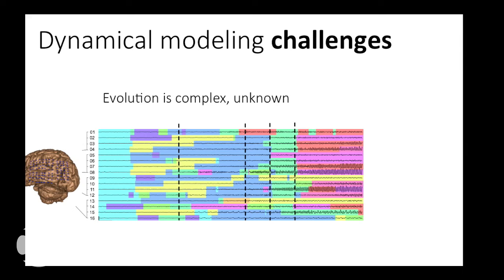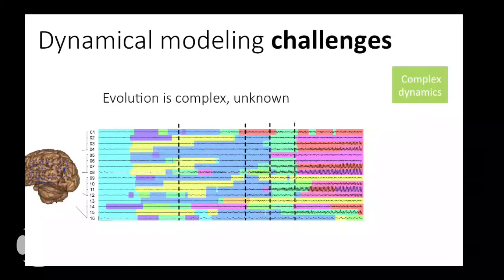When thinking about dynamical modeling, there are a number of challenges. One is that the dynamics themselves can be really complex. With intracranial EEG data, we developed a model that allows us to parse these complex dynamics into simpler dynamic behaviors. A lot of my earlier work focused on devising flexible models that allow the complexity of the learned model to adapt to the data — I gave a talk on ideas related to this back in 2012.